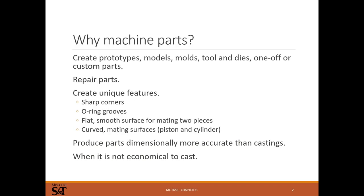So why machine parts? Some parts we can cast and it's the best or most economical way to make a part — in manufacturing it usually comes down to what's the cheapest way to satisfy the design intent. But some parts we can't cast: we need a better surface finish, we need to mate parts together with really nice flat accurate surfaces, maybe we need sharp corners, grooves, or very complex profiles we just can't get with casting.